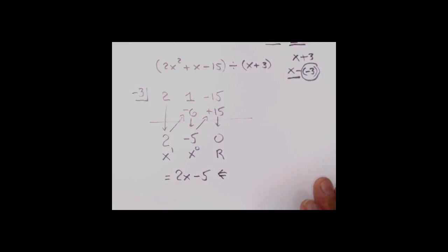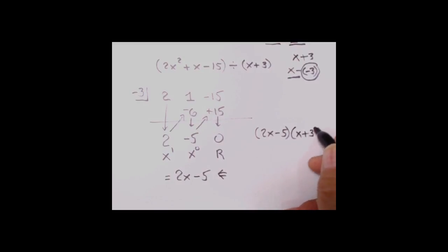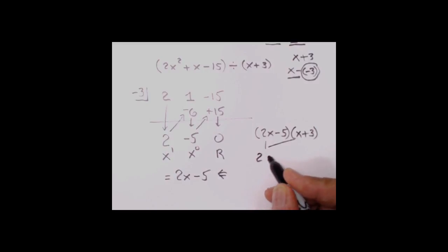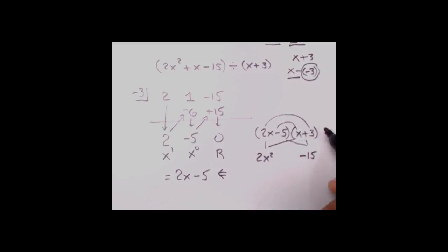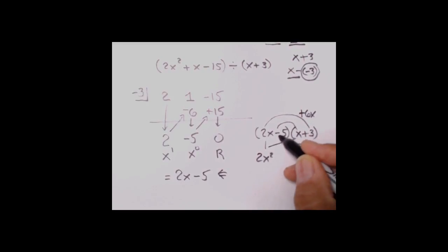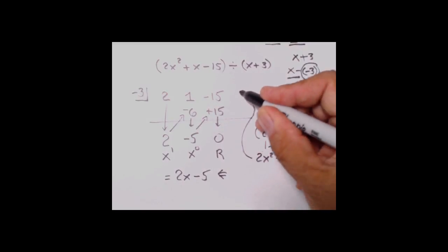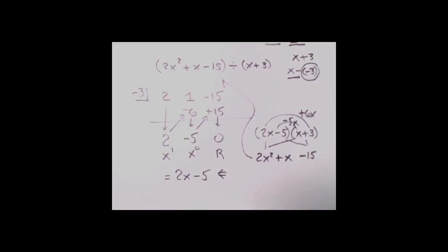Now let's prove that this works. We take the answer and multiply it by what we divided by. So I've got 2x minus 5 times x plus 3. These are a couple of binomials so we can use our FOIL shortcut. Multiply the two firsts: 2x squared. Multiply the two lasts: negative 15. Then do the two rainbows — plus 6x and negative 5x. These are like terms, so positive wins by 1: just plus x. That's exactly what we started with, so this proves it works.